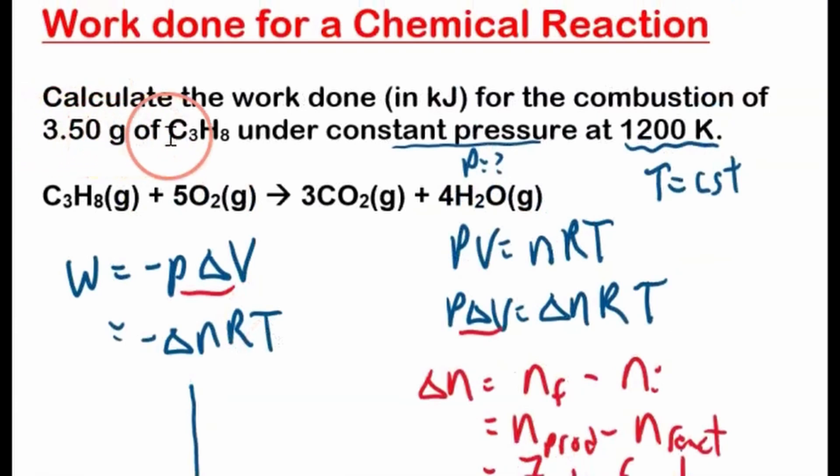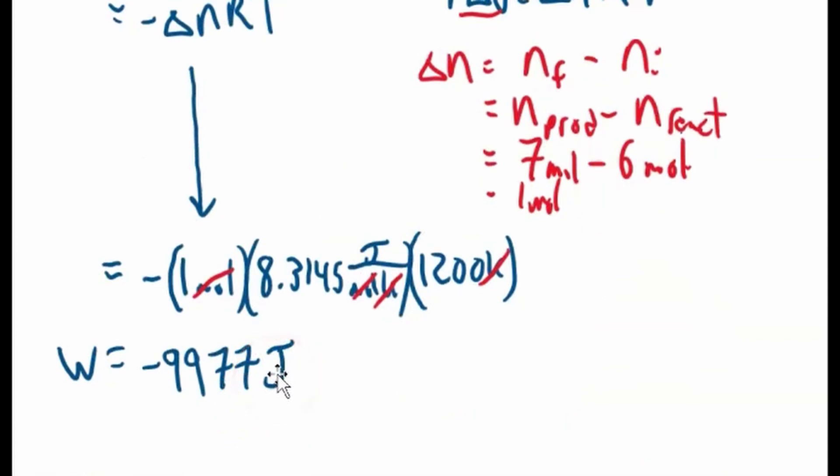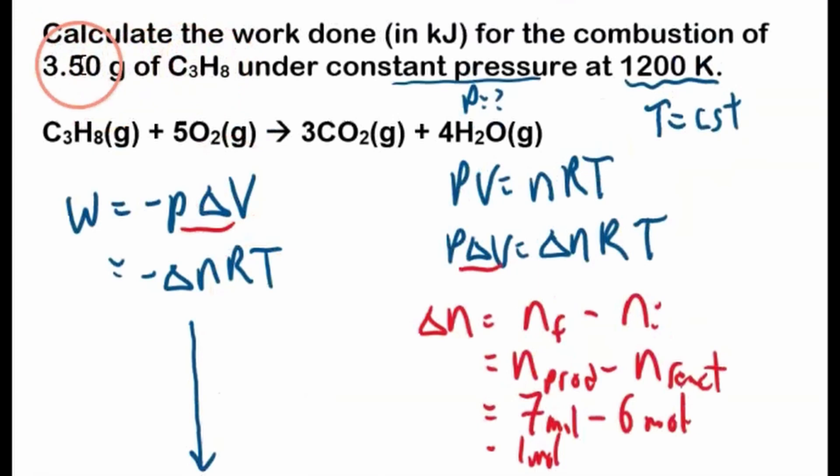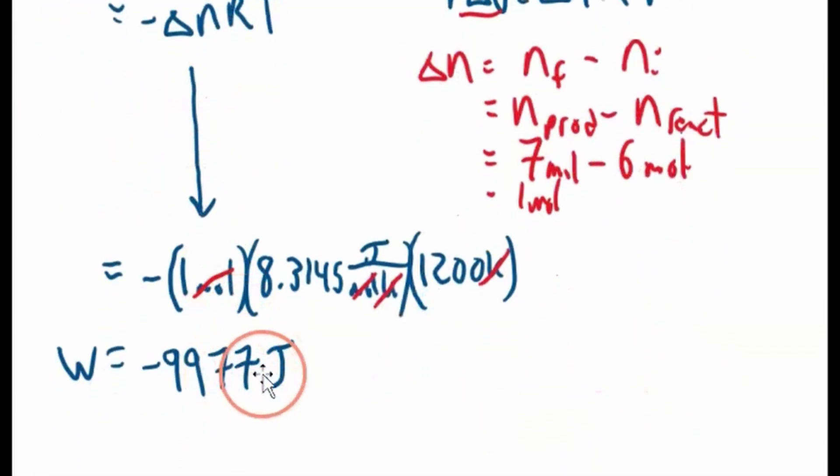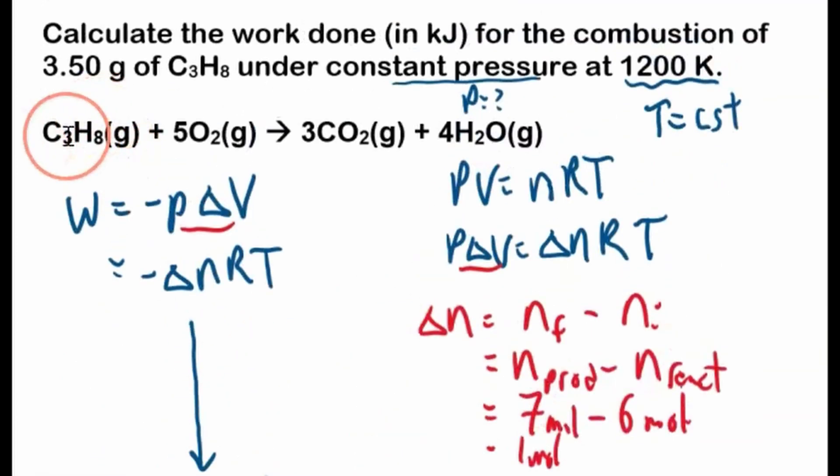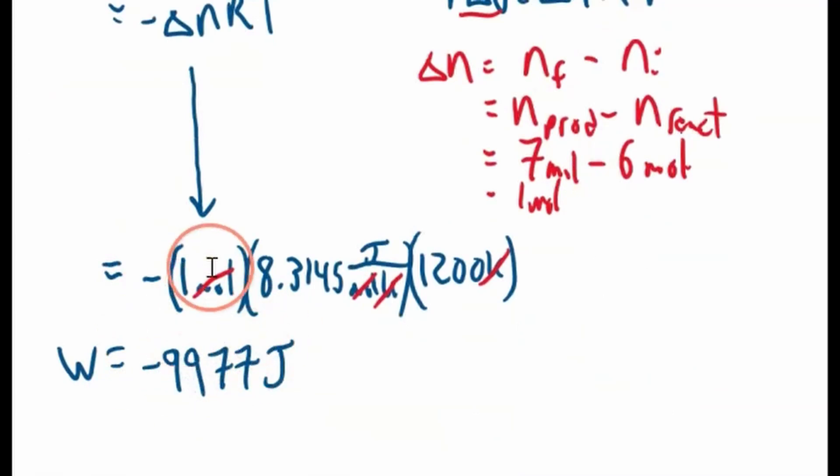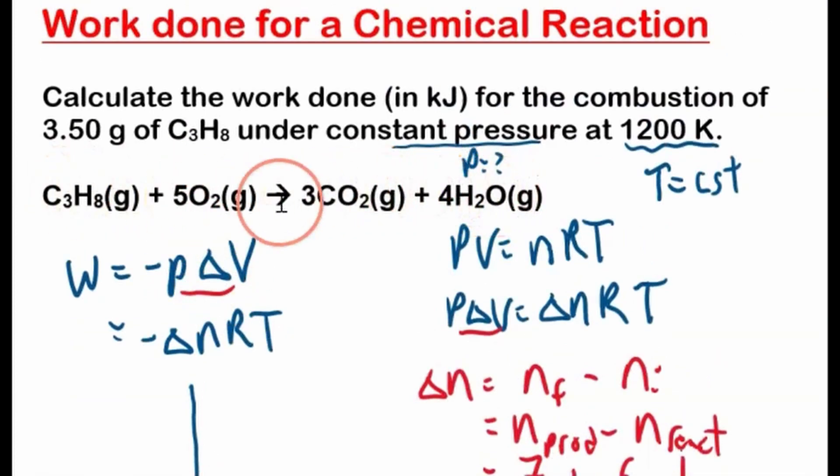But we didn't even use the mass of the propane here. All we used was the balanced chemical equation. Now we didn't do anything wrong. What this work represents - it's not joules for this many grams of propane because we didn't use this number. It's this many joules of work for one mole of propane. Because this was calculated based on this balanced equation. So that's how much work is done if one mole of propane reacts with five moles of oxygen to produce three moles of CO2 and four moles of water. So that's how much work - the amount of work we calculated is the amount of work assuming one mole of propane reacted fully.